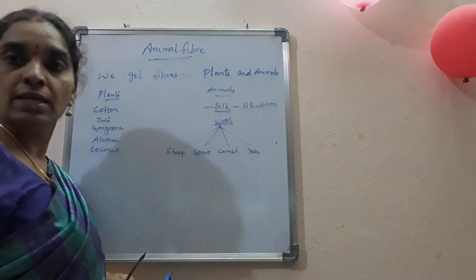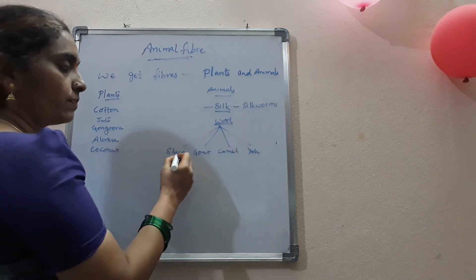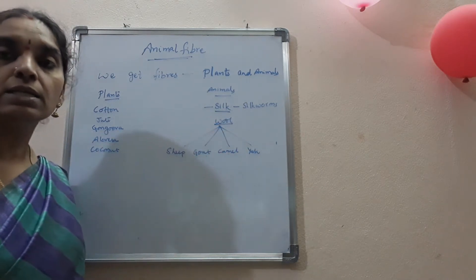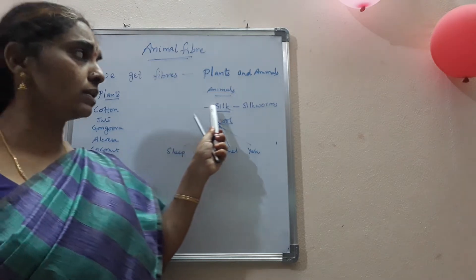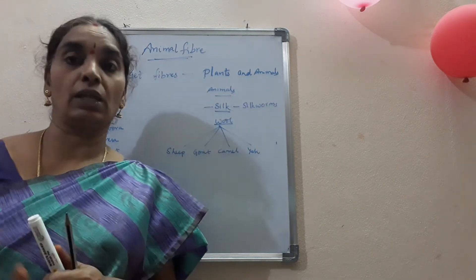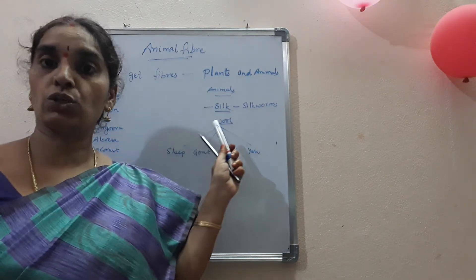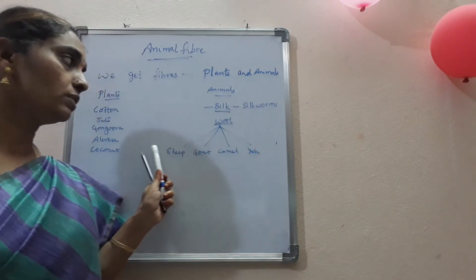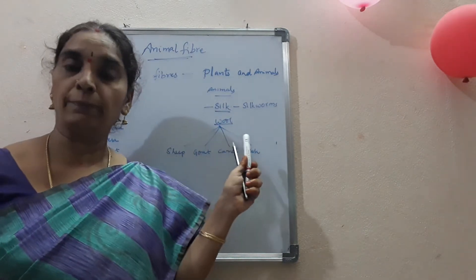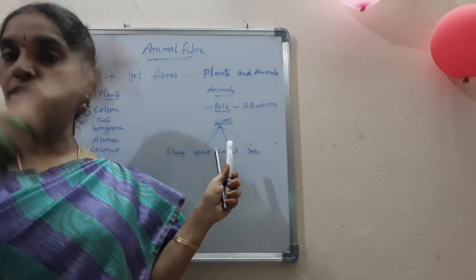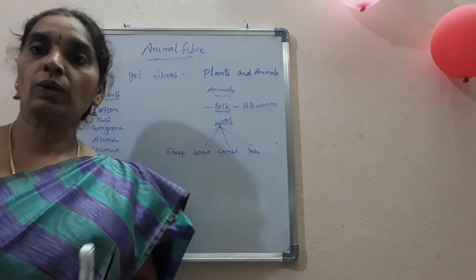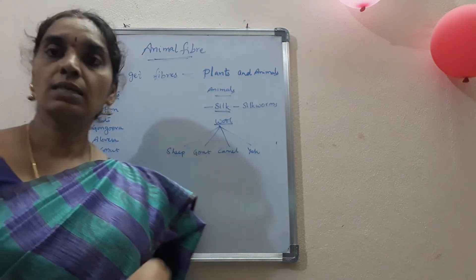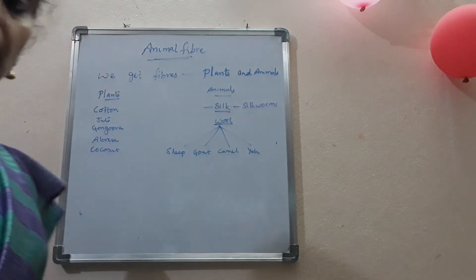We get silk from silkworms and wool from sheep, goat, camel, and yak. So what are the different steps involved in the manufacture of silk fabric from silkworms, and also how do you get woolen fabric from the wool obtained from sheep? That is what we are going to learn in this lesson.